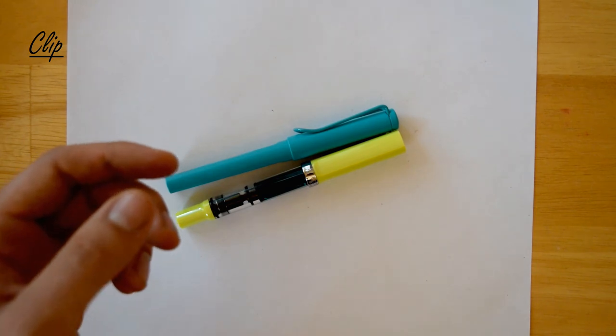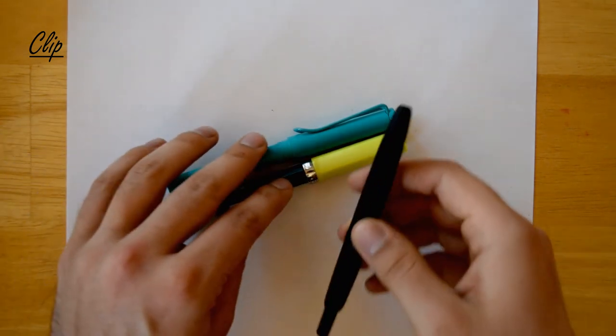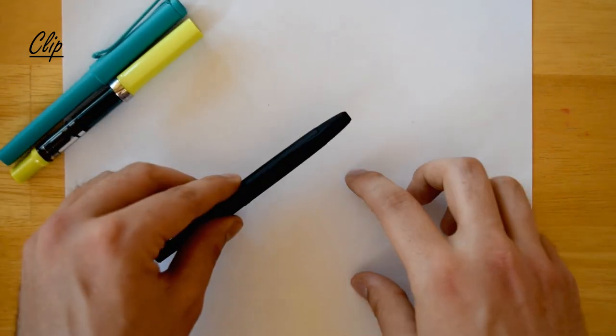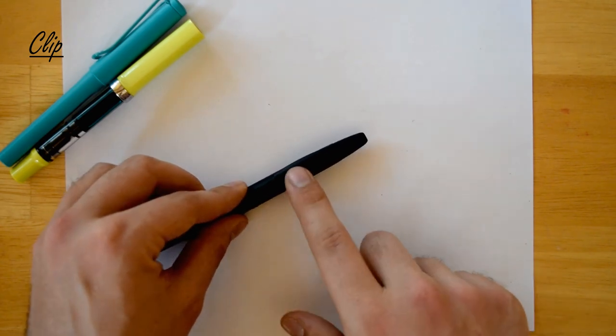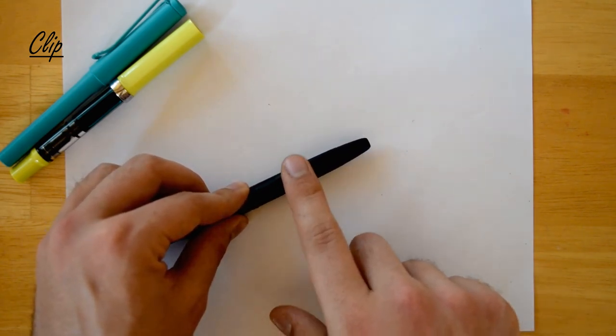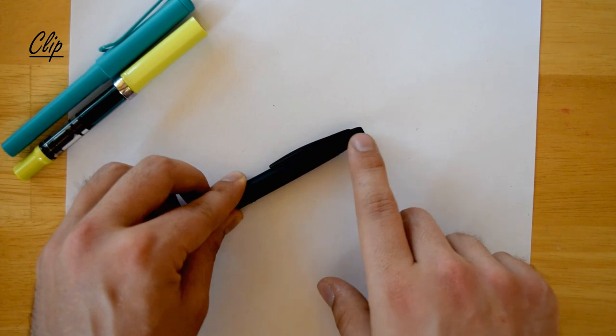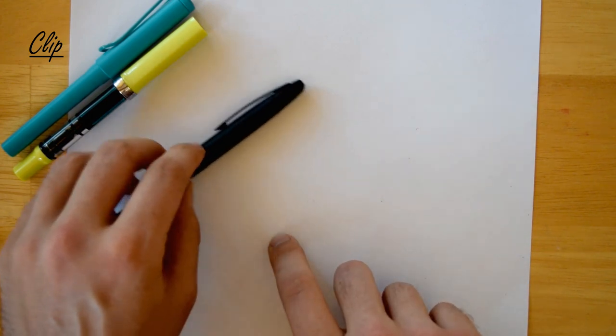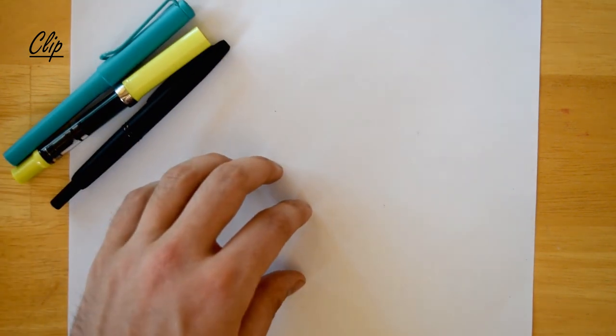Except on pens that have no cap, like this capless vanishing point. Since it doesn't have a cap, the clip is actually fixed to the grip section.